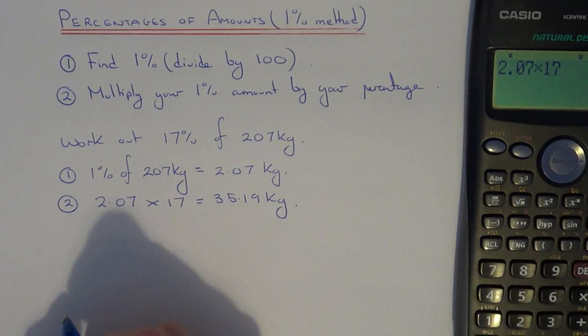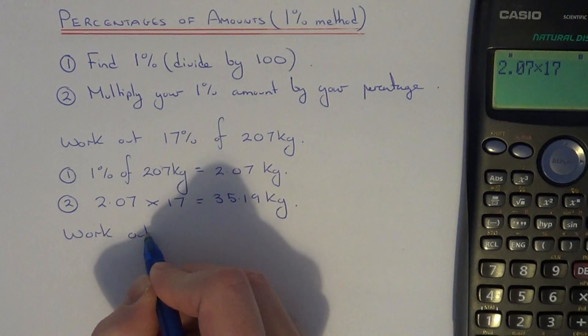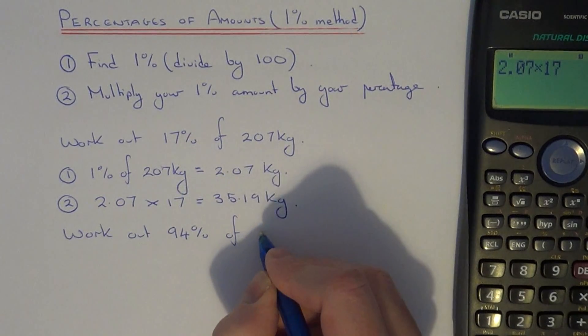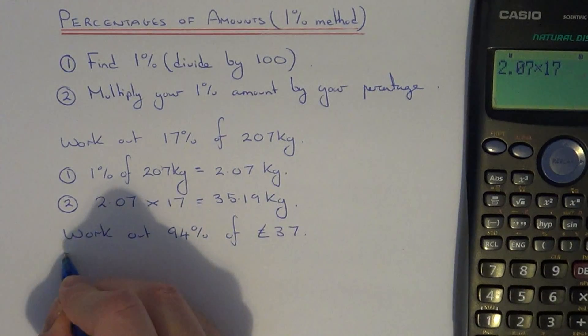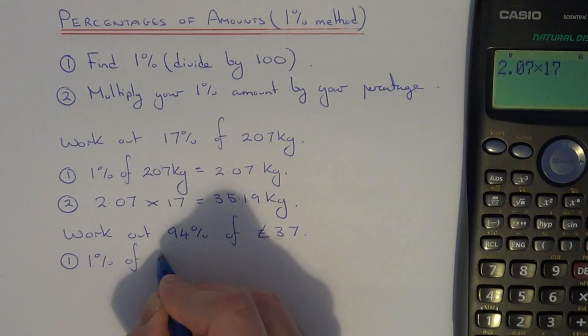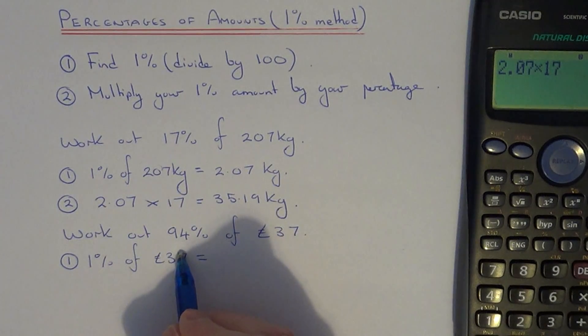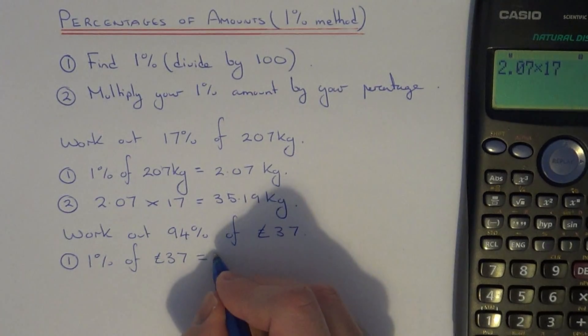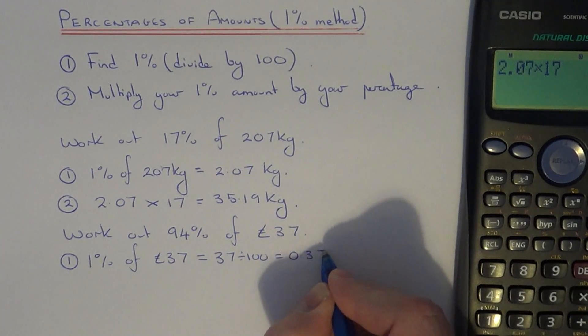So let's do one more example. Work out 94% of £37. Again, all you need to do is first of all find 1% of £37. So just do 37 divided by 100, and this will be 0.37.